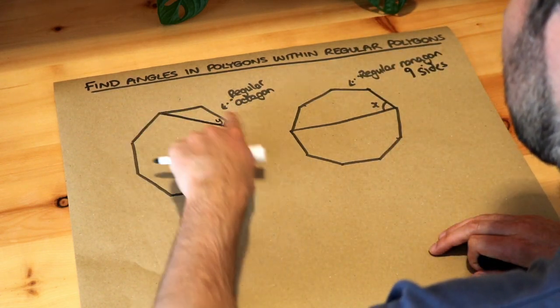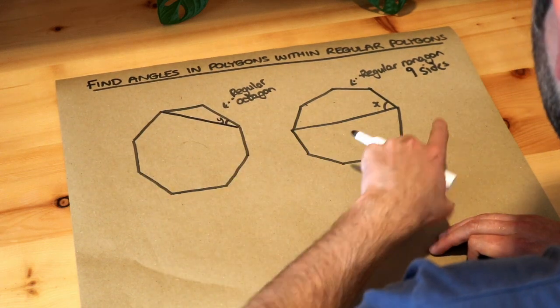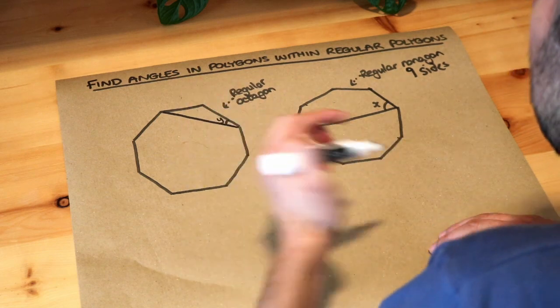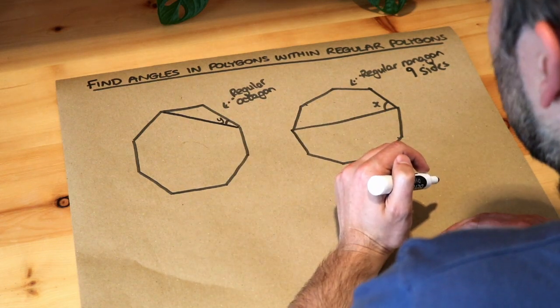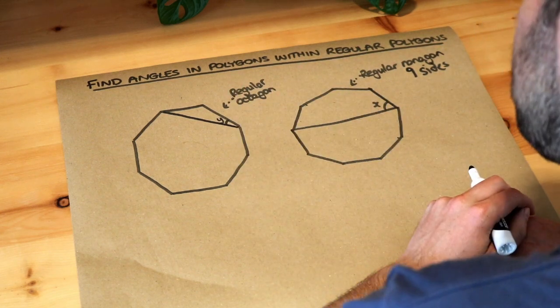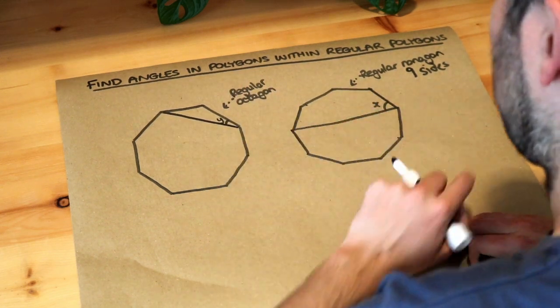We've got a shape inside this octagon, we've got this triangle here, and then inside this nonagon we've got this five-sided shape here which is a pentagon. A five-sided polygon is a pentagon. It's not a regular pentagon but it's still a pentagon, and we want to find y here, we want to find x here.